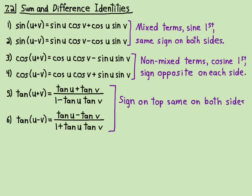Same sign on top on both sides, opposite sign on bottom. The top is the sum or difference of the two tangents, and the bottom is one either minus or plus the product of the two tangents.